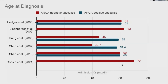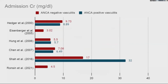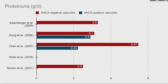This is also where ANCA-positive vasculitis was diagnosed. Admission creatinine was generally between 4 to 5, but the UK cohort had much higher creatinine. The US study reported lower eGFR in ANCA-negative patients at admission. ANCA-negative patients had much higher levels of proteinuria compared to ANCA-positive patients, including nephrotic-range proteinuria in many.